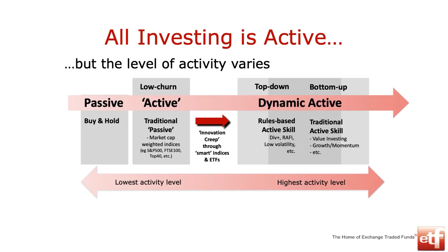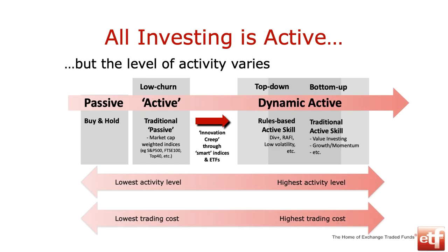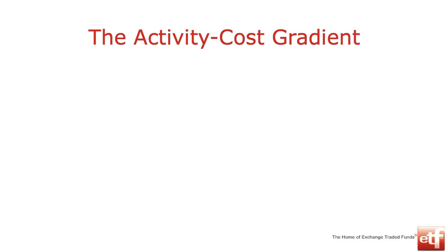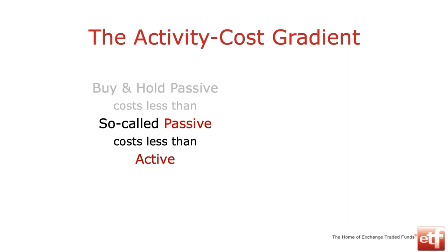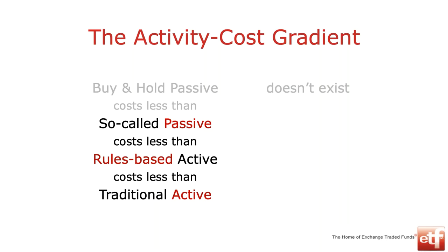We've got this continuum from lowest activity - with low trading costs - through to highest activity at the other end. What we call passive is really low-churn active, and rules-based active, which costs less than traditional active - that's your smart beta. Depending on where you sit on this gradient, your costs of the underlying fund will vary. So the disclosure of TER and TIC is now so useful and important for us to look at.